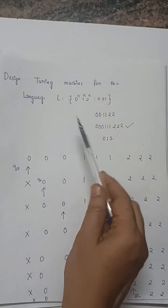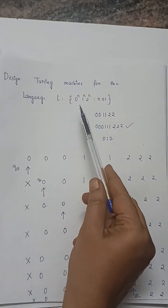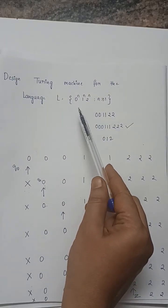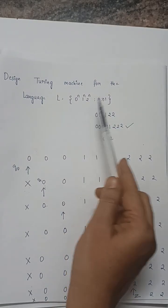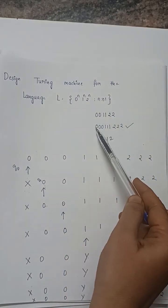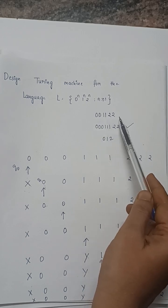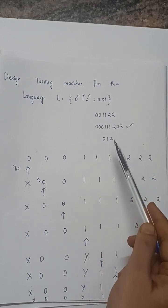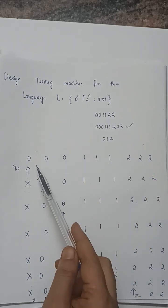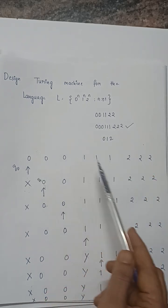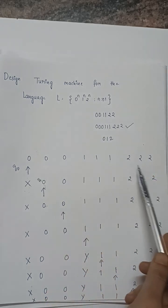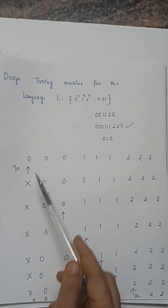Design a Turing machine for the language L = 0^n 1^n 2^n. For example, if there are two zeros, there will be two ones and two twos. In this example, I have taken three zeros, three ones, and three twos.